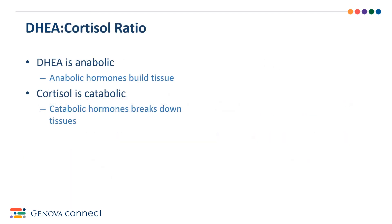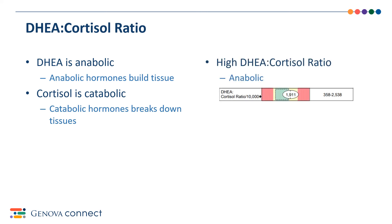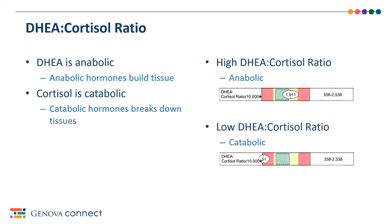The DHEA to cortisol ratio compares DHEA, which is anabolic or builds tissues, to cortisol, which is catabolic or breaks down tissues. A higher ratio means that you are dominant in DHEA compared to cortisol, while a low ratio — what we typically see — means that you are dominant in cortisol compared to DHEA.